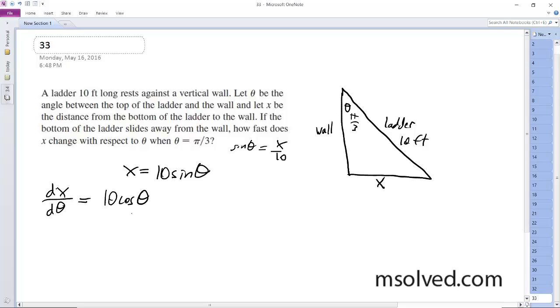So this is our derivative. So we plug in dx d theta for pi over 3, and we get 10 times the cosine of pi over 3.